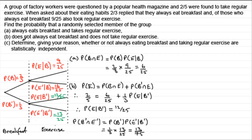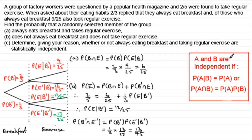For part C we need to determine whether always eating breakfast and taking regular exercise are statistically independent. As a quick reminder about independence: if you've got two events A and B, they are independent if the probability of A given B always equals the probability of A — meaning A is unaffected by the occurrence of B. Another way to look at it is that the probability of A and B equals the probability of A times the probability of B. I'll use the first version in this question.